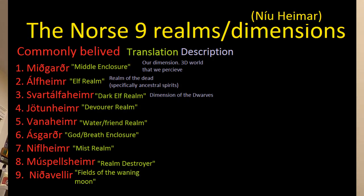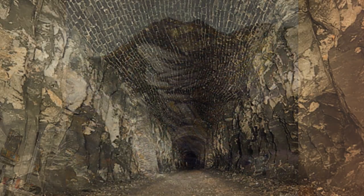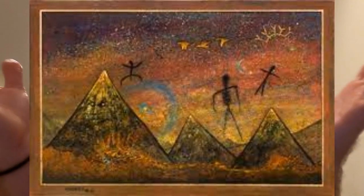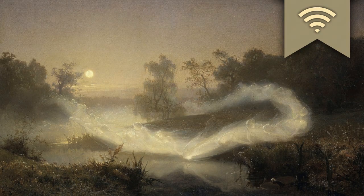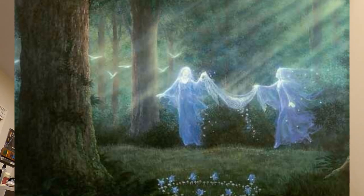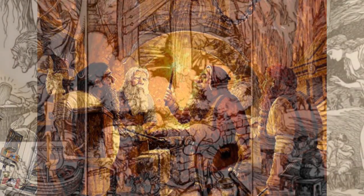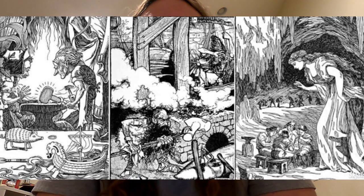Number three: Svartalfheim, the realm of the dark elves. These are not evil spirits — they are not evil ancestral spirits. They can be helpful to us, but also mischievous at times. They are spirits just like the light elves. The main difference is that Svartalfheim is located in the earth, the rocks, the mountains, things like that — so this dimension seems to be associated more with the earth. Whereas the dimension of the light elves seems to be more associated with the air and space around us above ground. The light elves are very clearly ancestral spirits, but the dark elves are clearly mostly dwarves from the myths. The dwarves are spirits too that play a part in helping and providing resources for us humans.